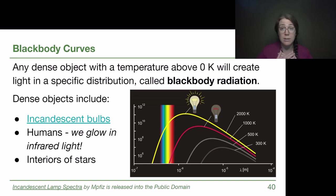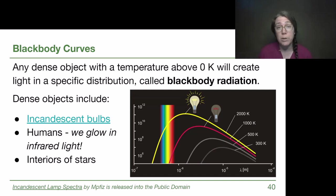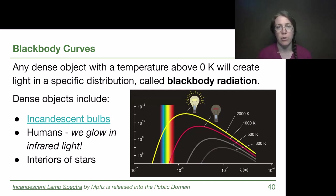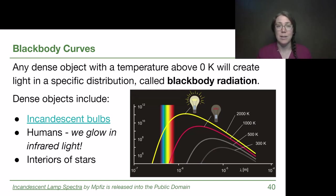We human beings are dense and our temperatures are above absolute zero, so we produce black body radiation that peaks in the infrared. We are warm and we produce a very small amount of those longer wavelength, lower energy forms of light, but we don't really glow in the visible. We don't pick up with our eyeballs that anybody is glowing.